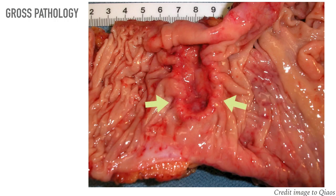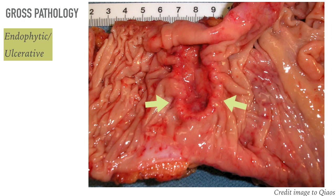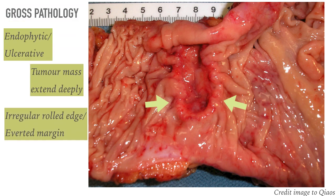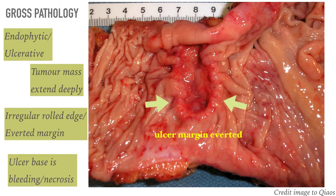Another gross pathological appearance of the tumor, as shown by the arrows, appears to be endophytic or ulcerative because the tumor mass extends deeply within the mucosa. We can describe it as an endophytic or ulcerative tumor, with irregular rolled edges or inverted margins at the periphery of the lesion. The ulcer base is red due to bleeding or dusky due to necrosis.